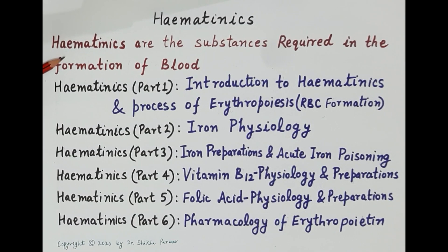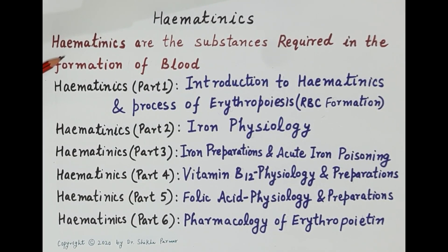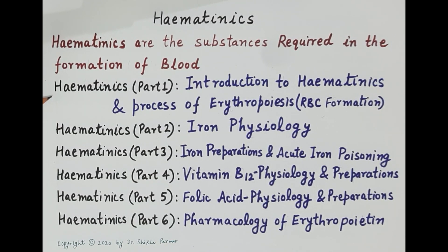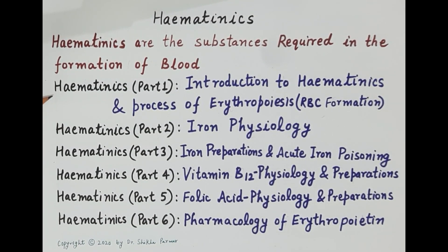For the purpose of simplicity and easy understanding, this topic is covered in six parts — six videos. The first part deals with an introduction to hematinics and the process of erythropoiesis, that is, the process of formation of red blood cells. This helps us understand how iron, vitamin B12, folic acid, and erythropoietin are essential for RBC formation and how their deficiency results in anemia.